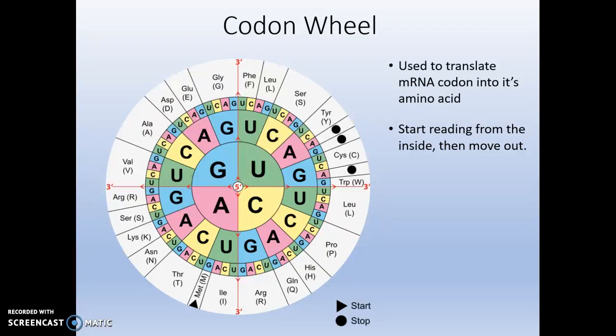When you look at this wheel, you see the organization of these letters, which are the bases, into three circles: inner circle, a middle circle, and the outer circle. When we're reading our messenger RNA codons, we're going to start from the center, which is five prime, and move outward toward the three prime.